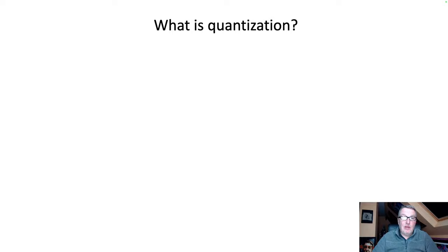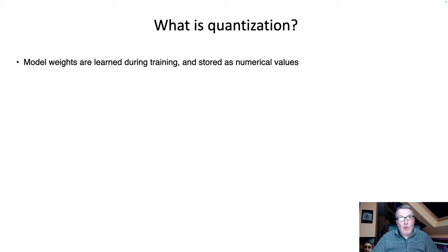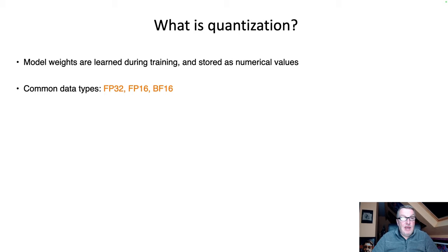So first of all, let's define what quantization is. Model weights and model parameters are learned during training or fine-tuning, and they're stored as numerical values. The common data types for those numerical values are typically floating-point formats: FP32 — 32 bits, 4 bytes — or FP16, floating-point 16, 16-bit, 2 bytes. And a more accurate variant that doesn't overflow called BF16, which is still 16-bit.